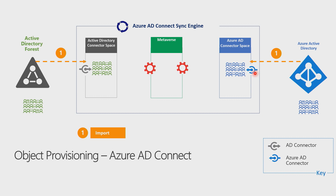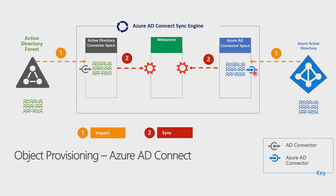The second step is a sync process, which takes objects from all the connector spaces, and then runs the rules to calculate which objects need to be provisioned or deprovisioned from where, and also the attributes and group memberships, et cetera. Those calculations are stored in a working area that we call the metaverse, which is also stored in a SQL database data layer.